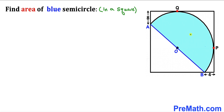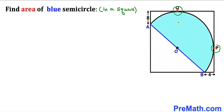Welcome to pre-math. In this video we have a blue semicircle fully inscribed in a square, such that AB is the diameter of this semicircle and O is the center. This vertical segment is eight units, this horizontal segment is four units, points P and Q are the points of tangency, and our task is to calculate the area of this semicircle. Keep in mind that we are dealing with this square.